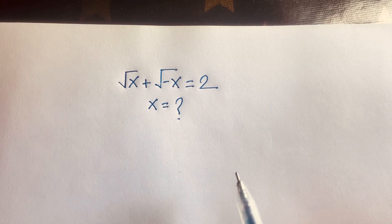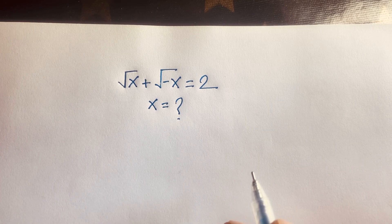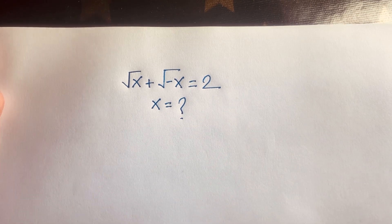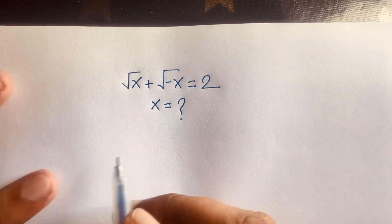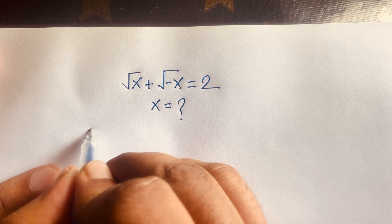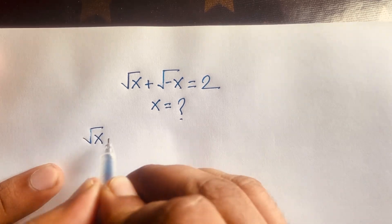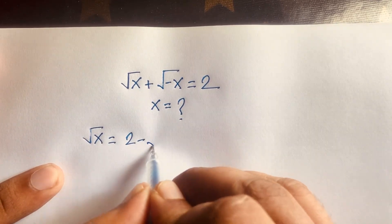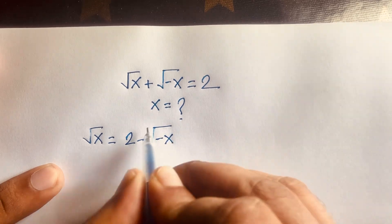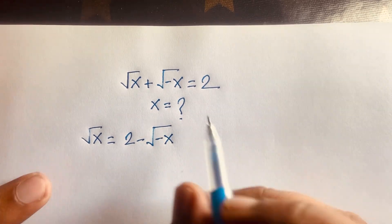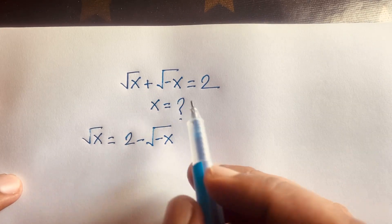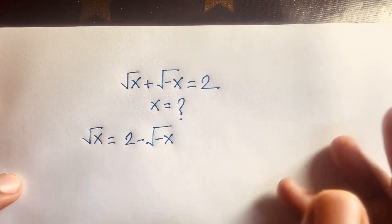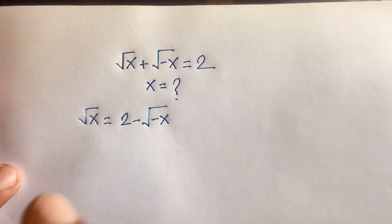Square root of x plus square root of negative x is equal to 2. What is x equal to? To solve this, I rearrange: square root of x equals 2 minus square root of negative x, by moving the square root of negative x to the other side.